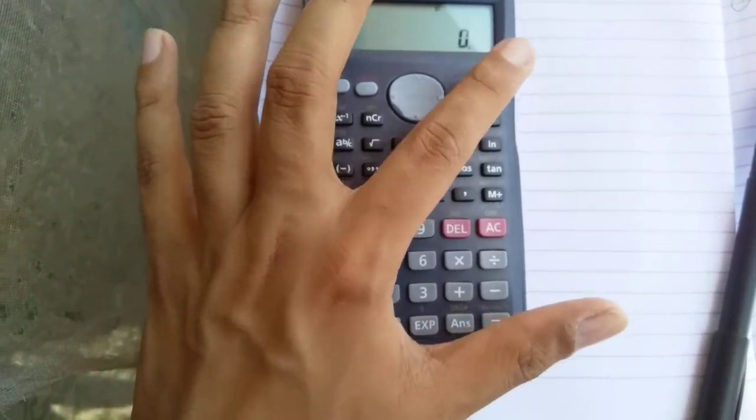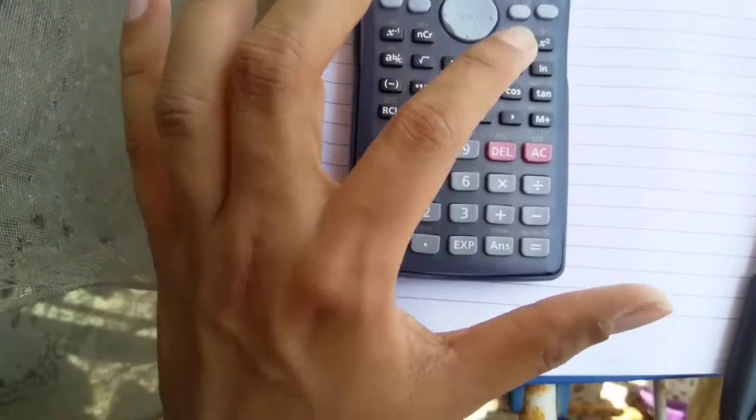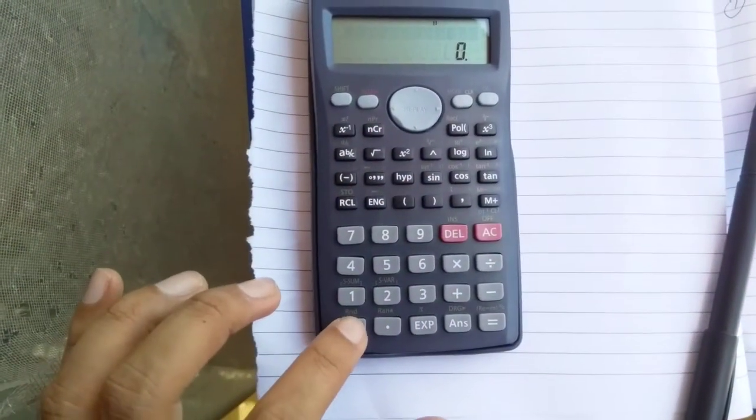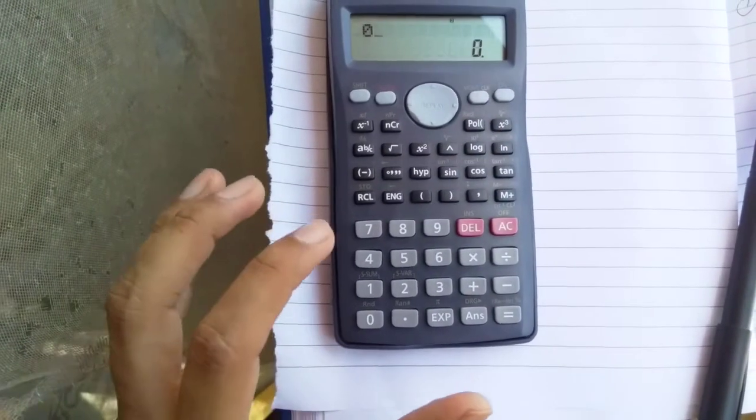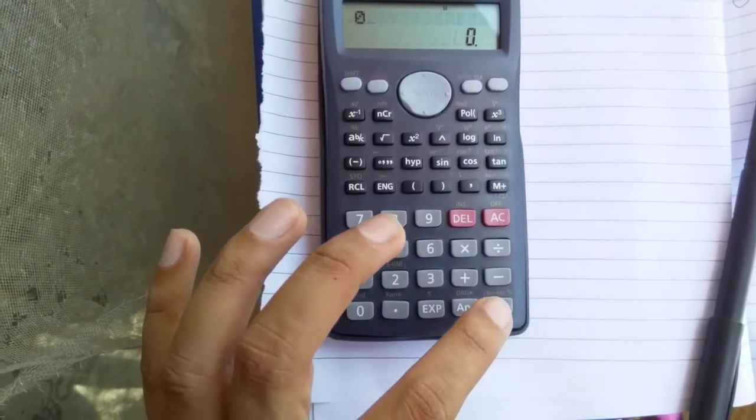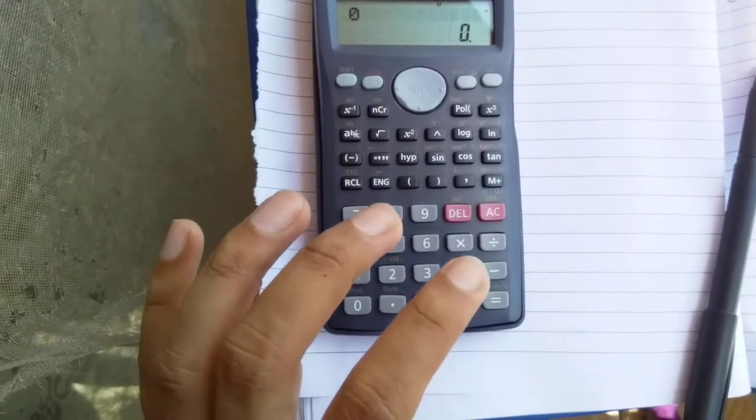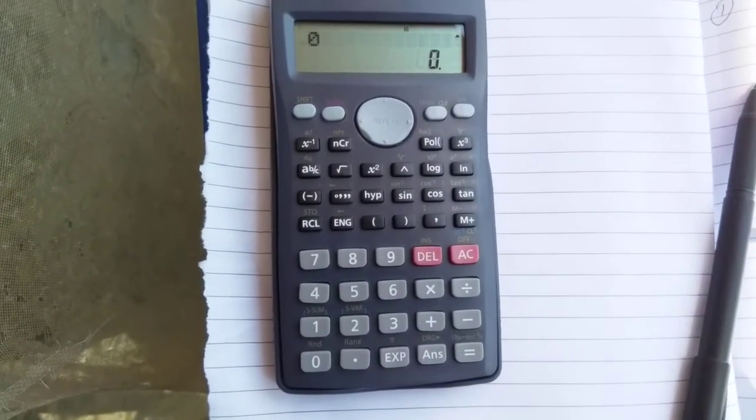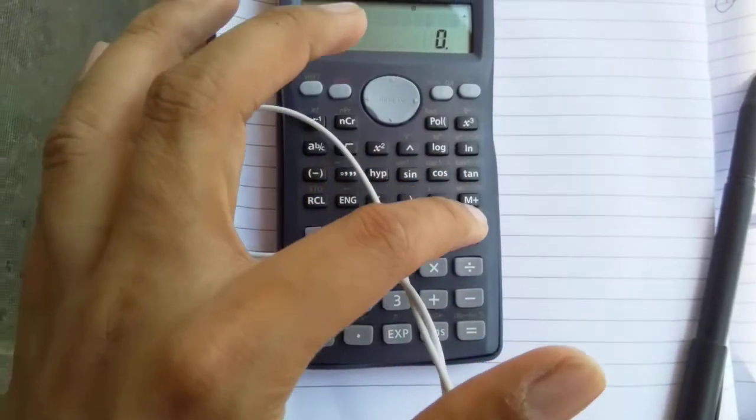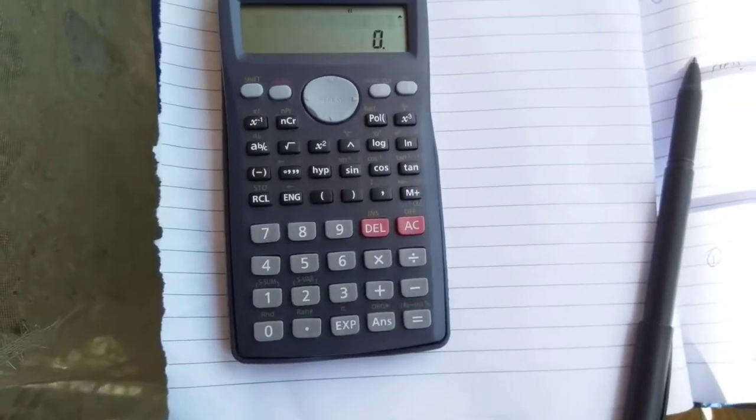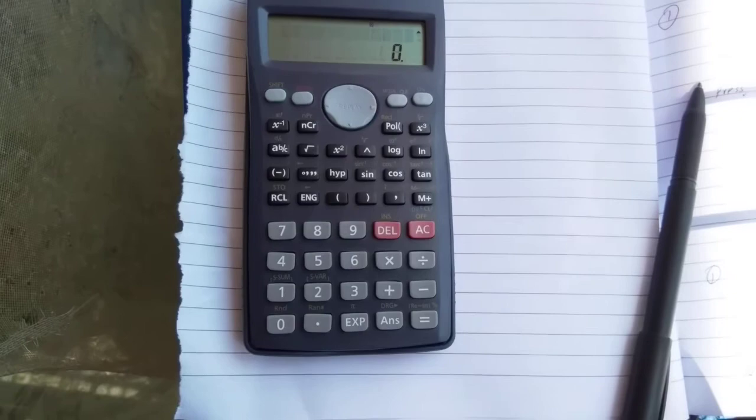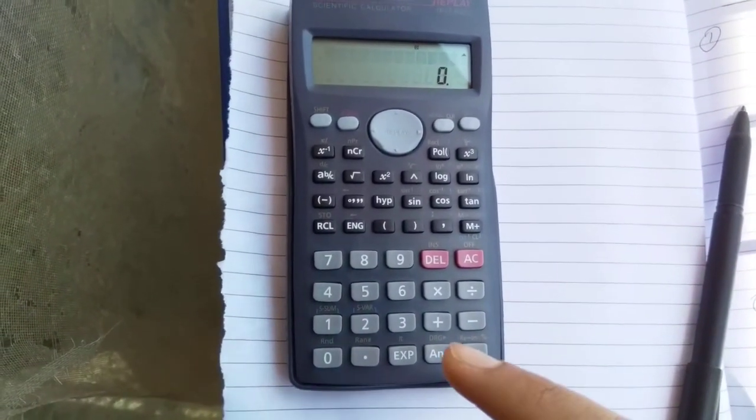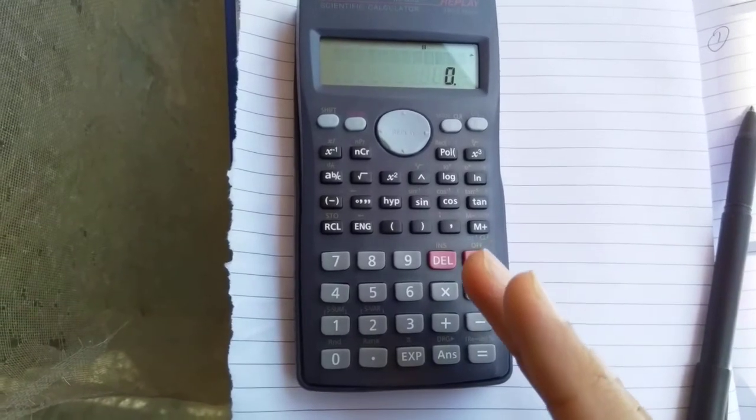The calculator is on. First of all, you have to press 0, then press equal sign so all the data that is previously stored in your calculator will be removed. Then press AC.